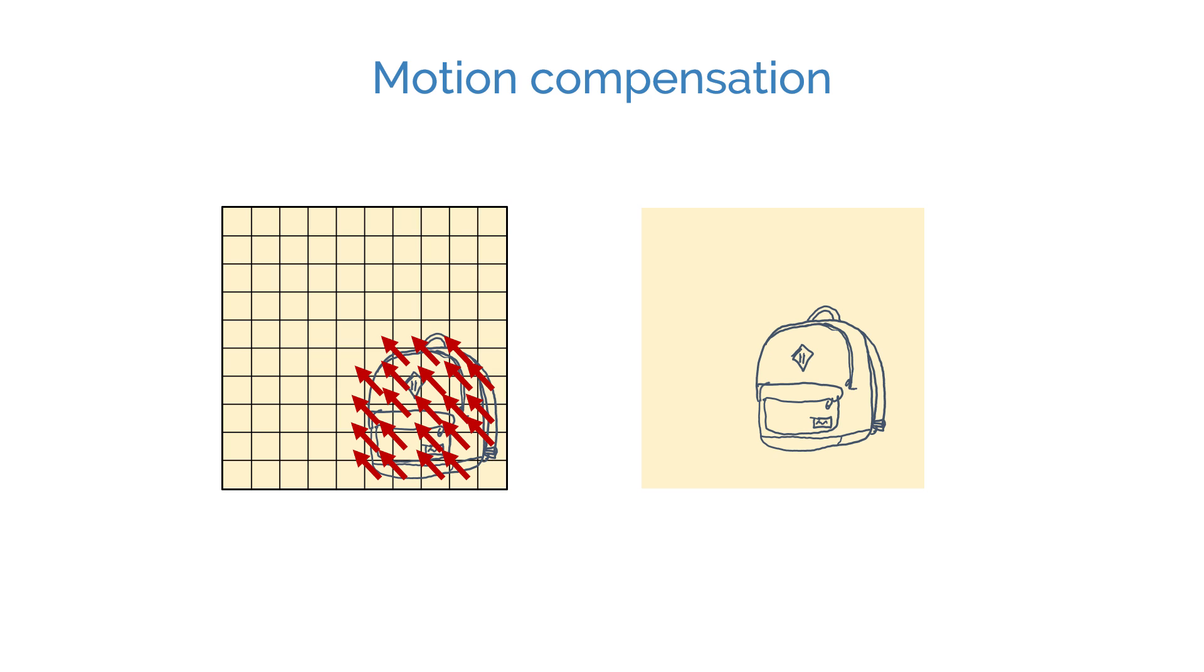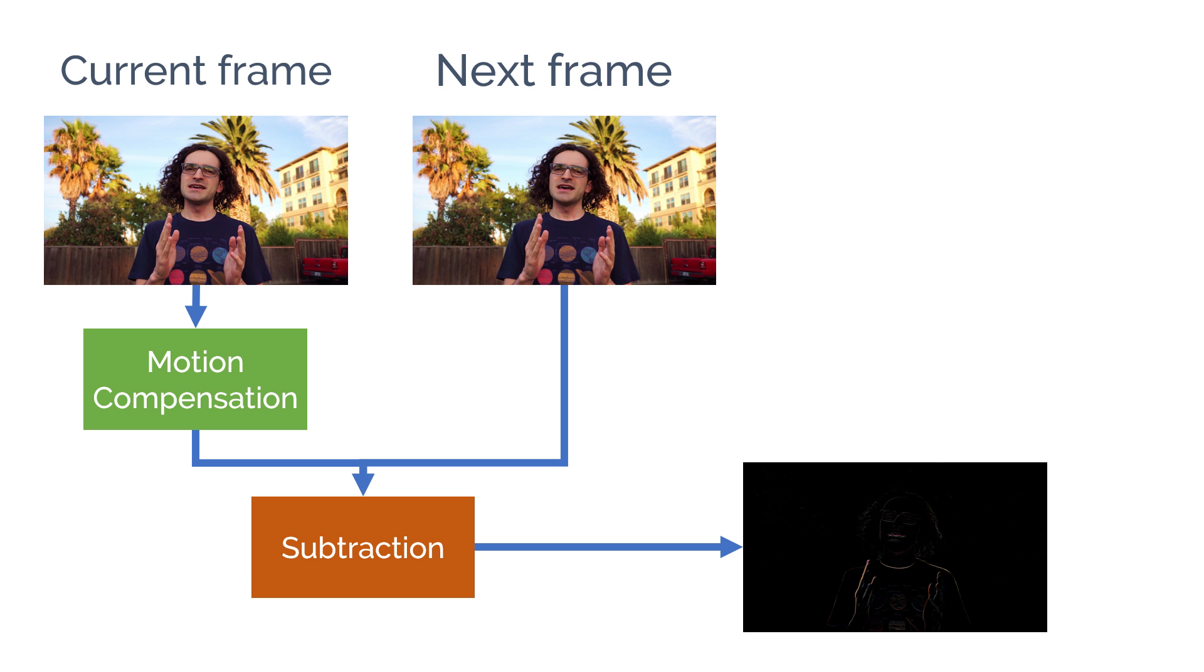Although motion compensation can reduce the difference between two consecutive frames greatly, it is usually not enough by itself to fully create the next frame. So in addition to the motion vectors, we should also save the frame differences between the actual and motion compensated frames. These differences are known as residual frames.